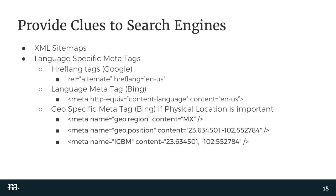Provide clues to search engines. Submit your XML sitemaps to all the search engines you're targeting. Use language-specific meta tags when you can — hreflang tags and language meta tags are a way to tell Google and Bing respectively what language that version of your site is targeting. If physical location is important, geospecific meta tags are something you should be considering for Bing. Make sure you're doing what you need to do for the search engines that are most prevalent.